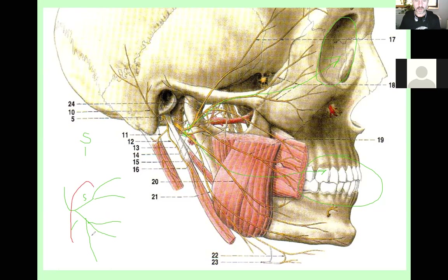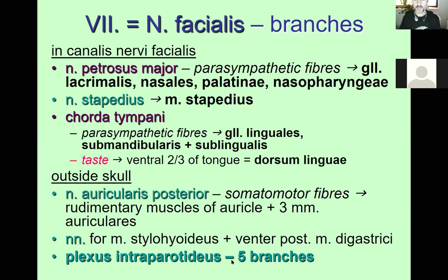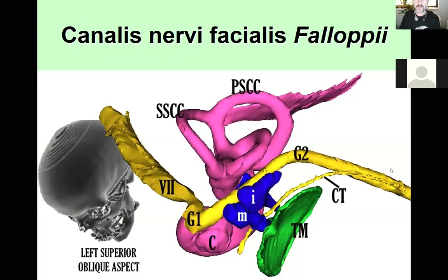The intraparotid plexus first branches into superior and inferior, then into five final branches. This is important clinically: if a parotid tumor requires surgical removal, part of the nerve may be removed, causing an iatrogenic palsy. On a 3D CT reconstruction, you can see the labyrinthine part, geniculum, tympanic part, and mastoid part. The chorda tympani is visible along with the tympanic membrane (green), ossicles in blue (malleus, incus, stapes), and the cochlear inner ear in violet (cochlea, vestibule, and three semicircular canals).